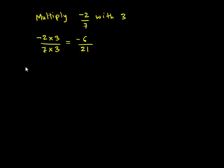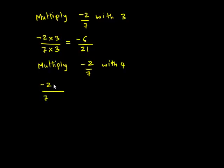And the next equivalent number can be obtained by multiplying negative 2 upon 7 with 4. This gives: negative 2 upon 7, when multiplied by 4 both in the numerator and in the denominator, we get negative 2 times 4 is negative 8 upon 7 times 4 is 28.